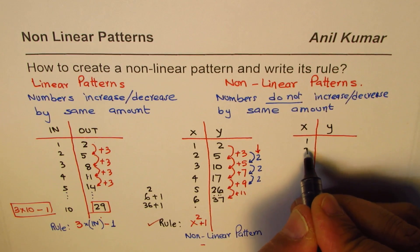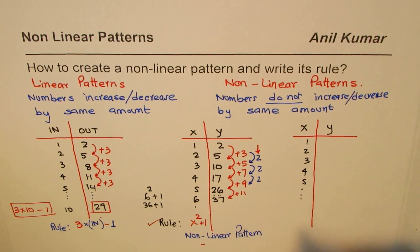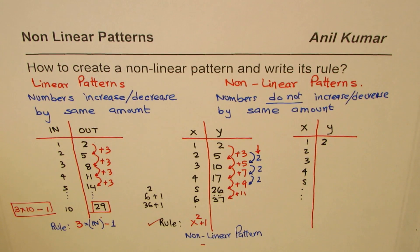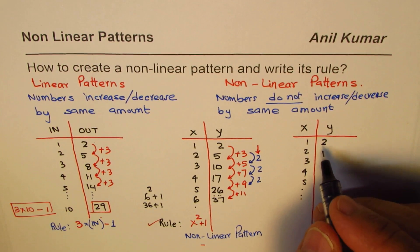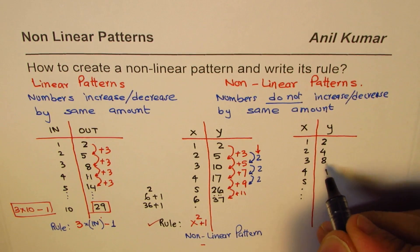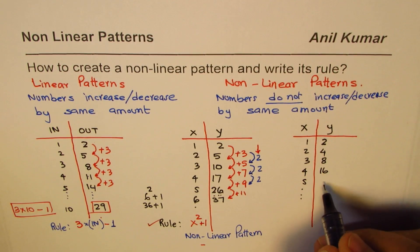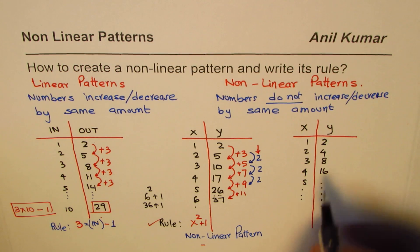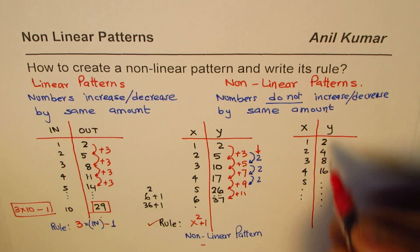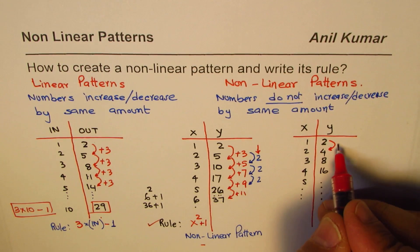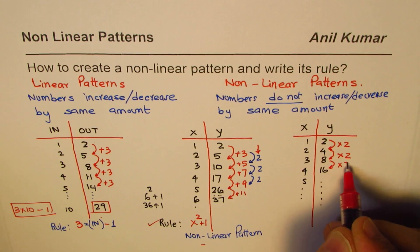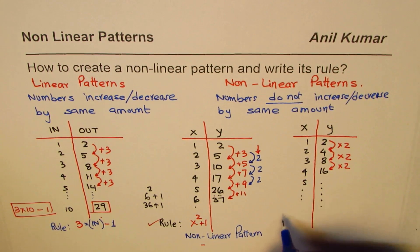Let's take another interesting example. We'll use x and y again, with input one, two, three, four, five. Starting with two, this time I'll double the numbers each time: two, four, eight, sixteen, and so on. I'm not adding the same amount — I'm multiplying by two each time.